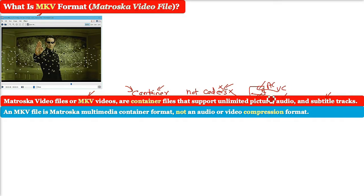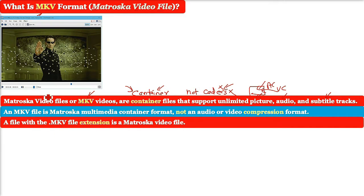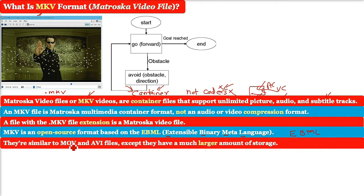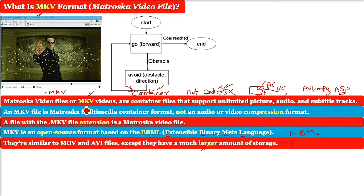A file with the .MKV file extension is a Matroska video file. MKV is an open source format which is based on EBML, which stands for Extensible Binary Meta Language. They are similar to MOV and AVI files except they have a much larger amount of storage required. The Matroska multimedia container is similar in concept to other containers like AVI, MP4, or Advanced Systems Format (ASF), but is an open standard and its implementation consists mostly of open source software.